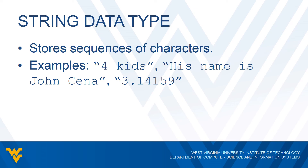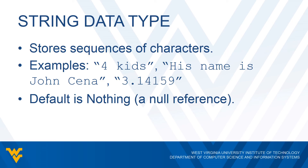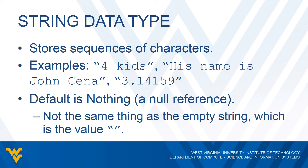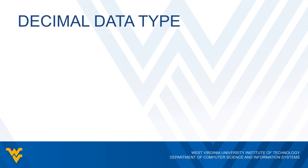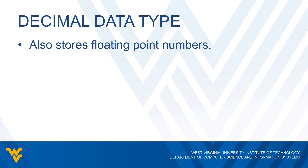The string data type simply stores strings — a sequence of characters surrounded in quotes. For example, we could have something like "4 kids" — numbers can be part of a string — or "his name is John Cena," or even numerical values like "3.14159," the first few digits of pi. The default value for a string is a little different from integers and doubles. The default value is actually nothing — what's called a null reference. We want to be careful because the null string is not necessarily the same as an empty string. An empty string is a string with quotes and nothing between them, whereas null means there's nothing — no quotes at all.